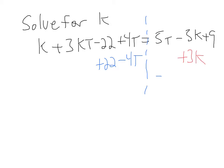So, I'm going to subtract 4T. I'm going to add 22. I'm also going to bring that plus 3k over here. I guess I could have lined that up under the k. So, why don't I?